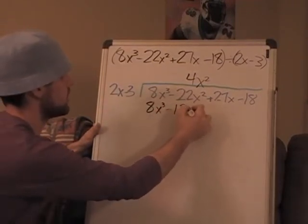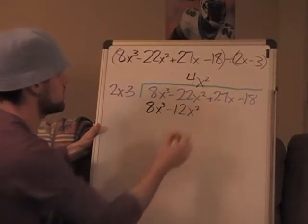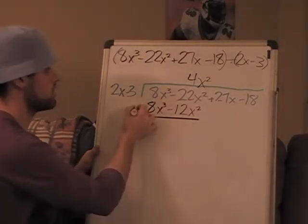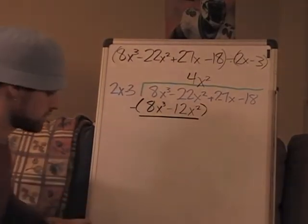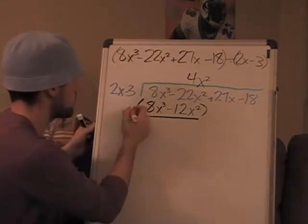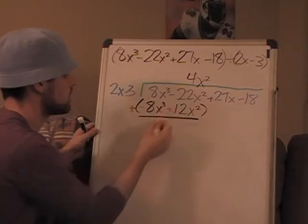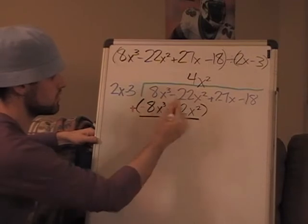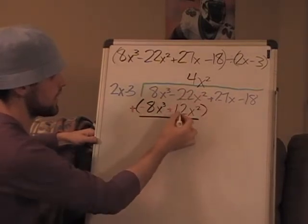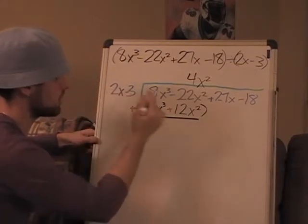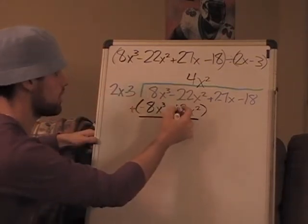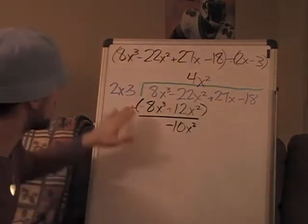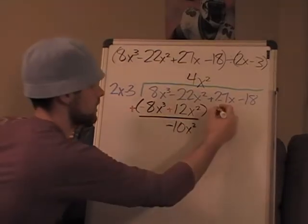Set up the subtraction, change it to addition. Now 8x³ and negative 8x³ cancel. 22x² and positive 12x² - that's going to be negative 10x². Now we're going to try to make this look like that once we bring down, of course, 27x.